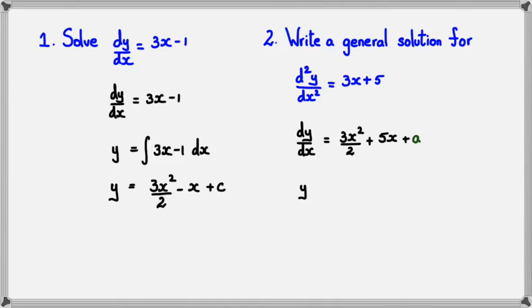So the first part will become 3x squared over 2 plus 5x plus A. So now I've got to integrate this once more, which means Y would equal 3x to the power of 3 divided by 2 times 3 plus 5x squared over 2.